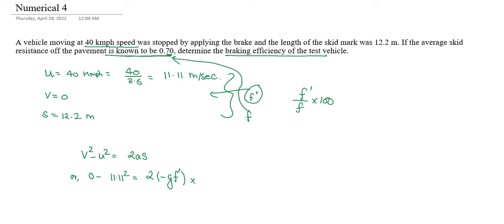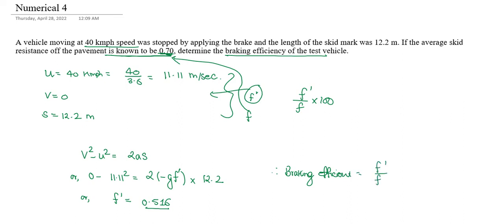The distance s is equal to 12.2. Where A equals minus g into EF'. Solving, EF' value is 0.516, and the pavement EF' value is 0.70. So the braking efficiency is equal to 0.516 divided by 0.70 into 100%, which equals 73.7%.